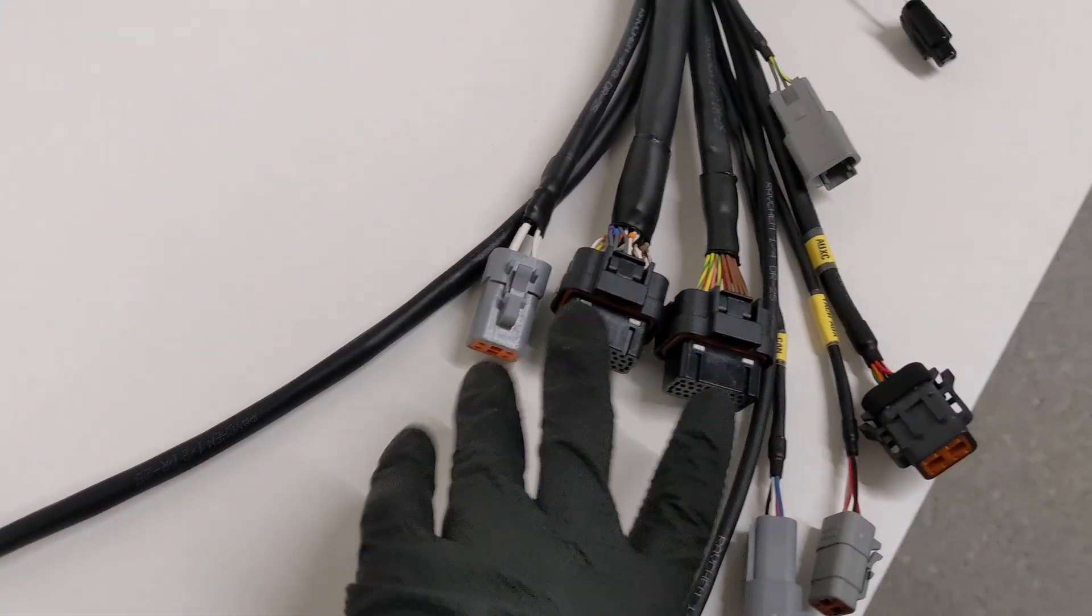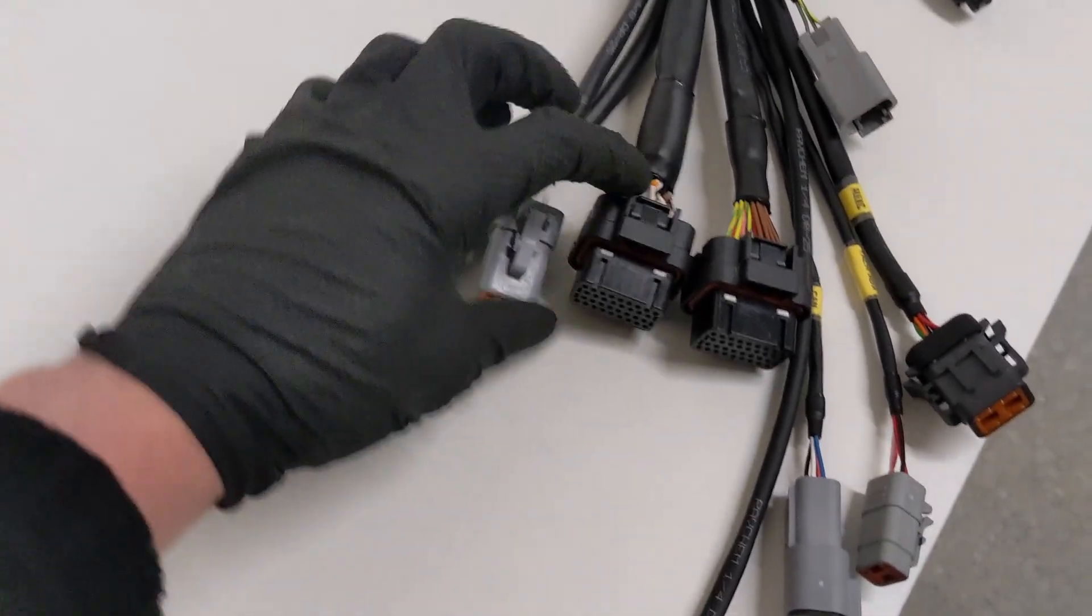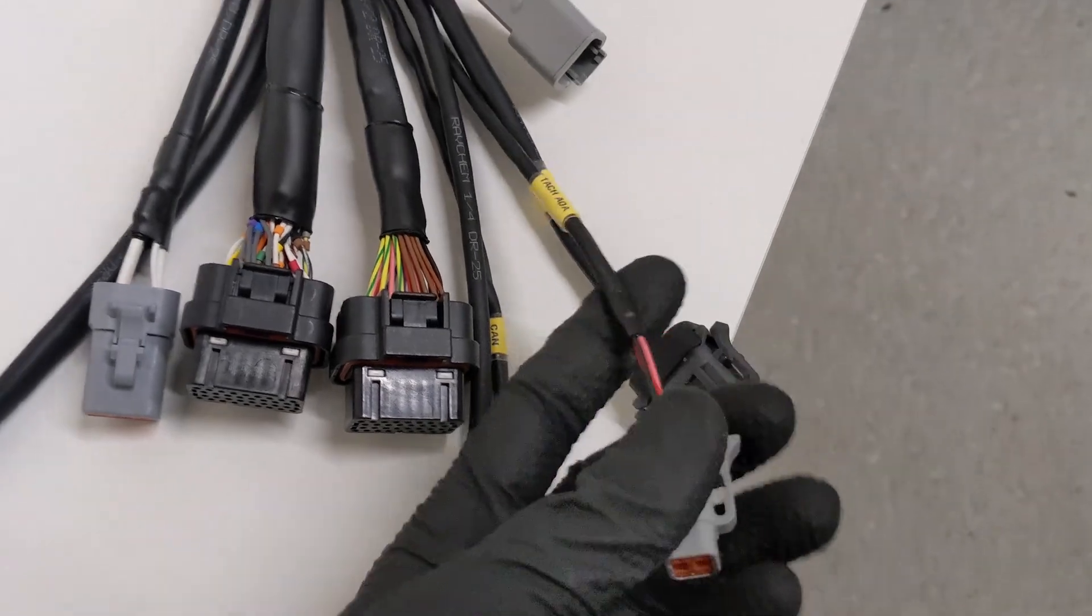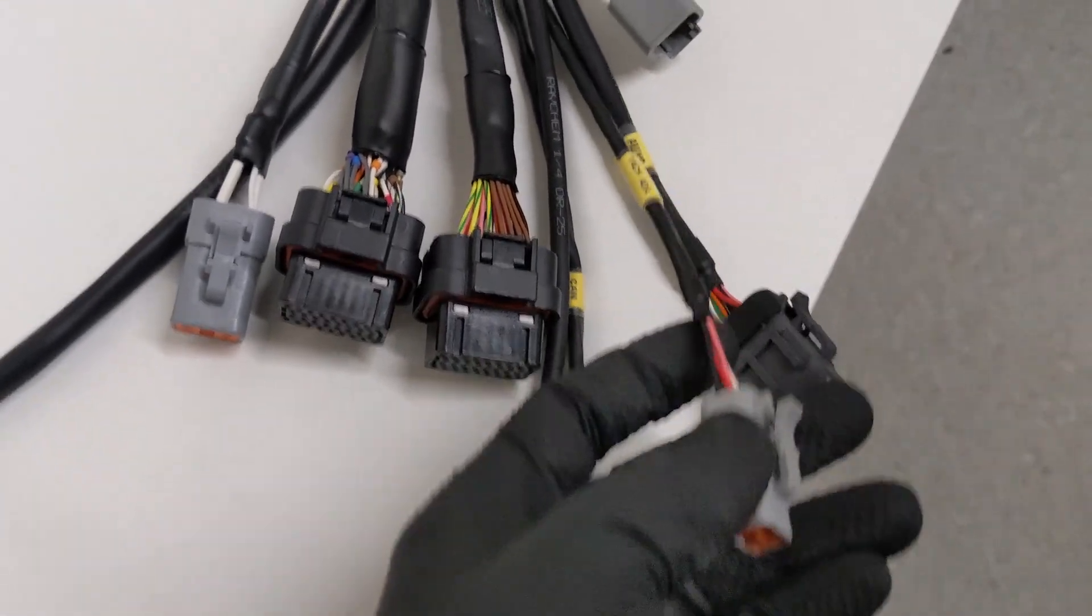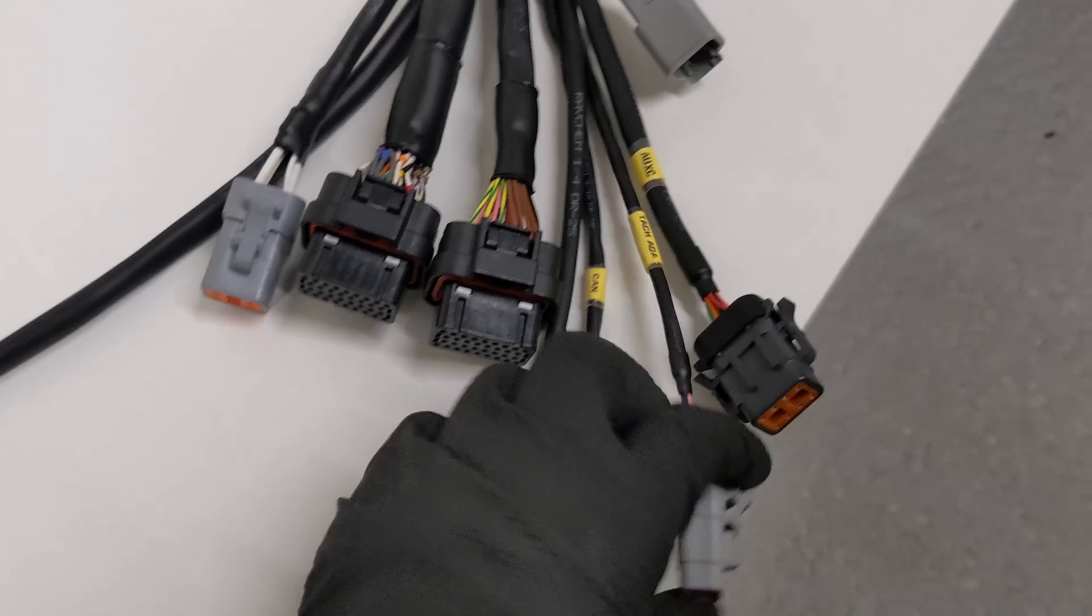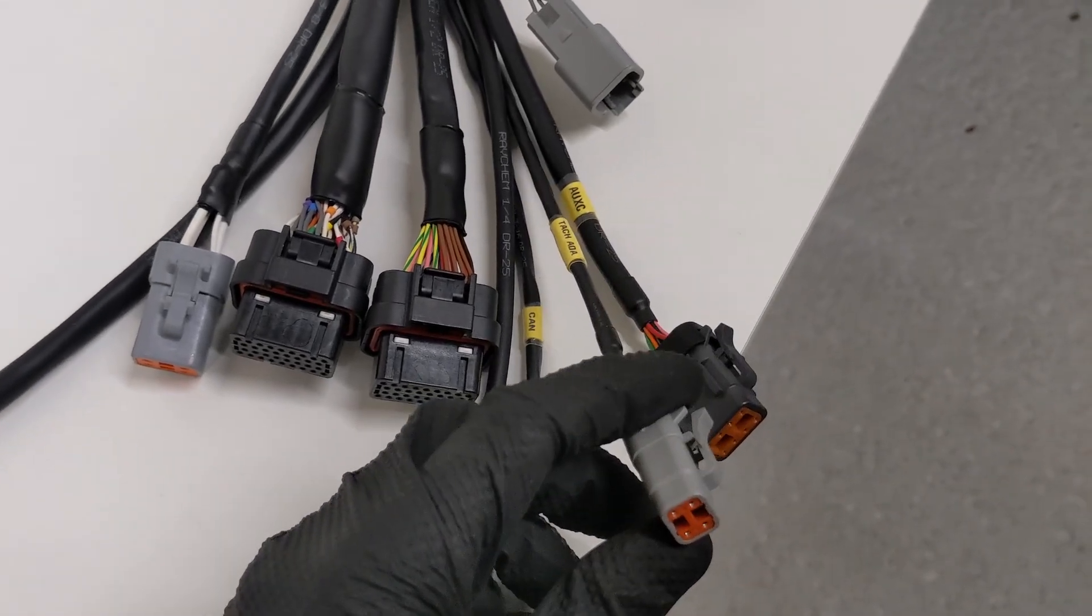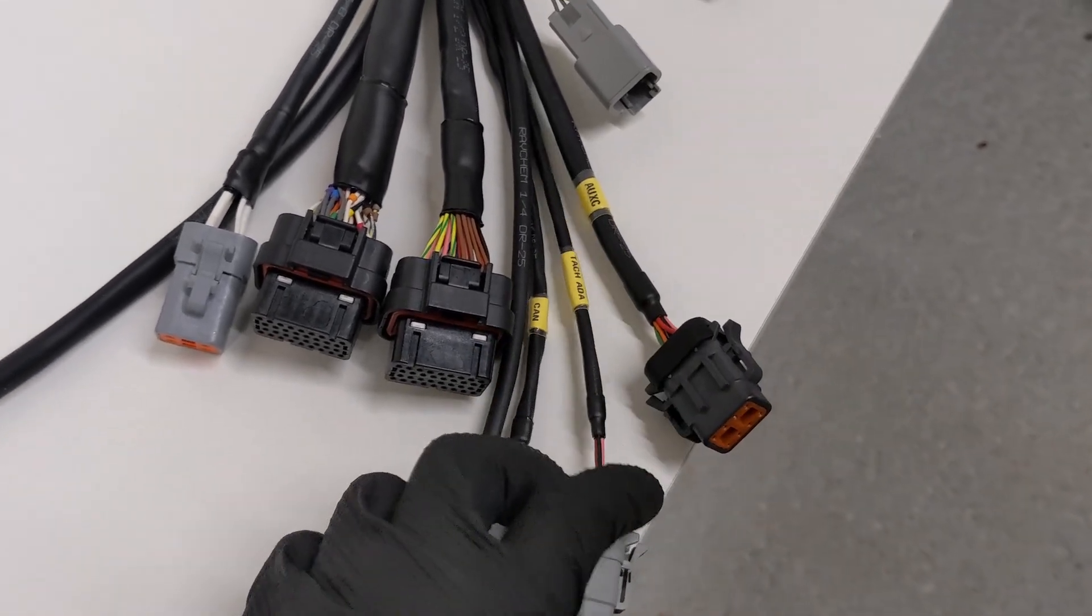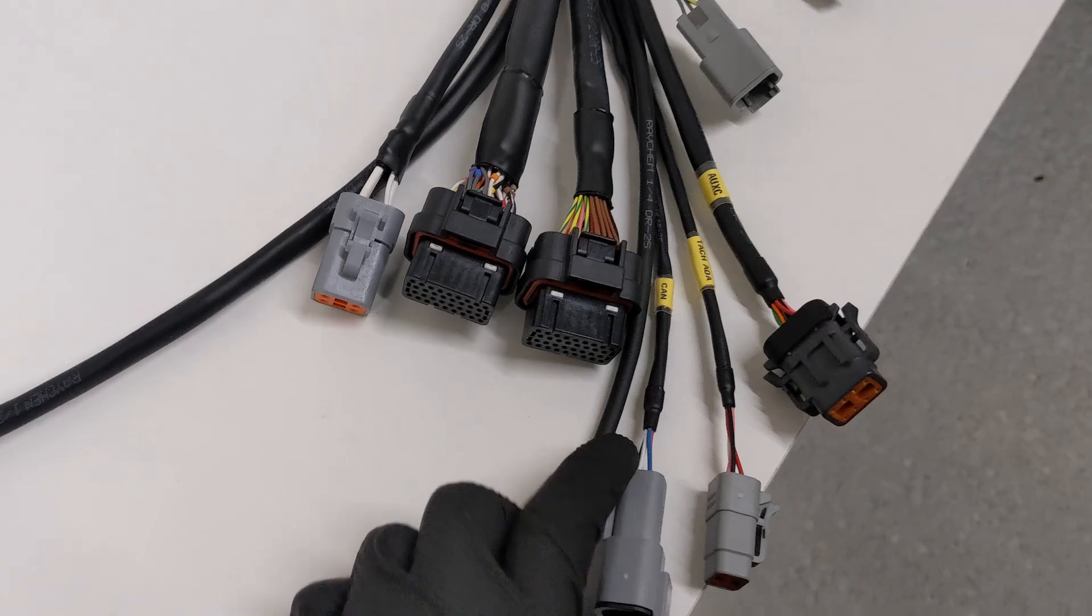The ECU/PDM is going to be mounted in the stock location with a tach adapter here. You can modify your tachometer or use the Haltech tach adapter. What that does is take the signal from the ECU output and boost it to a signal that the original gauge cluster can understand.